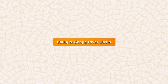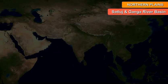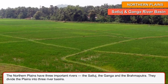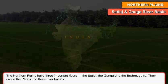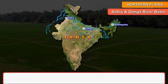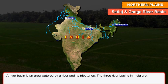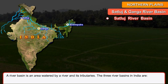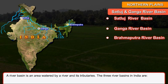The northern plains have three important rivers: the Satluj, the Ganga, and the Brahmaputra. They divide the plains into three river basins. A river basin is an area watered by a river and its tributaries. The three river basins in India are the Satluj River Basin, the Ganga River Basin, and the Brahmaputra River Basin.